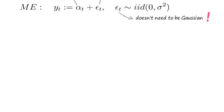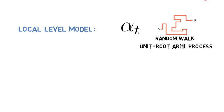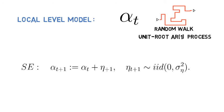The signal alpha t is the time t realization of the unobserved state variable. In the local level model, it follows a random walk or unit root AR1 process. The state equation reads alpha t+1 equals alpha t plus eta t+1, where eta t+1 is white noise with mean zero and variance sigma squared eta.